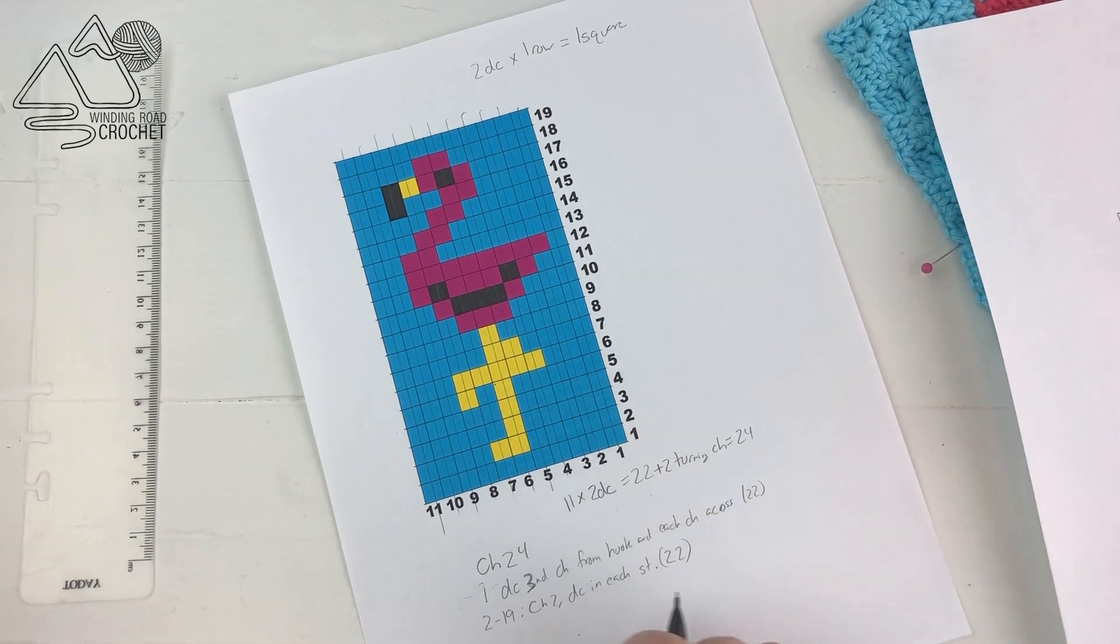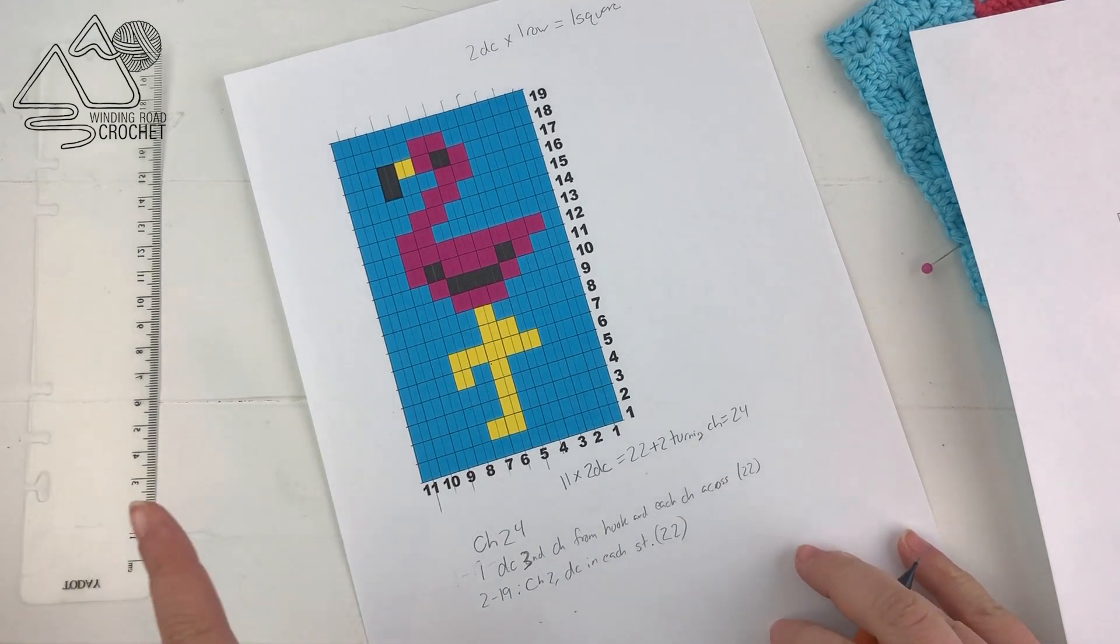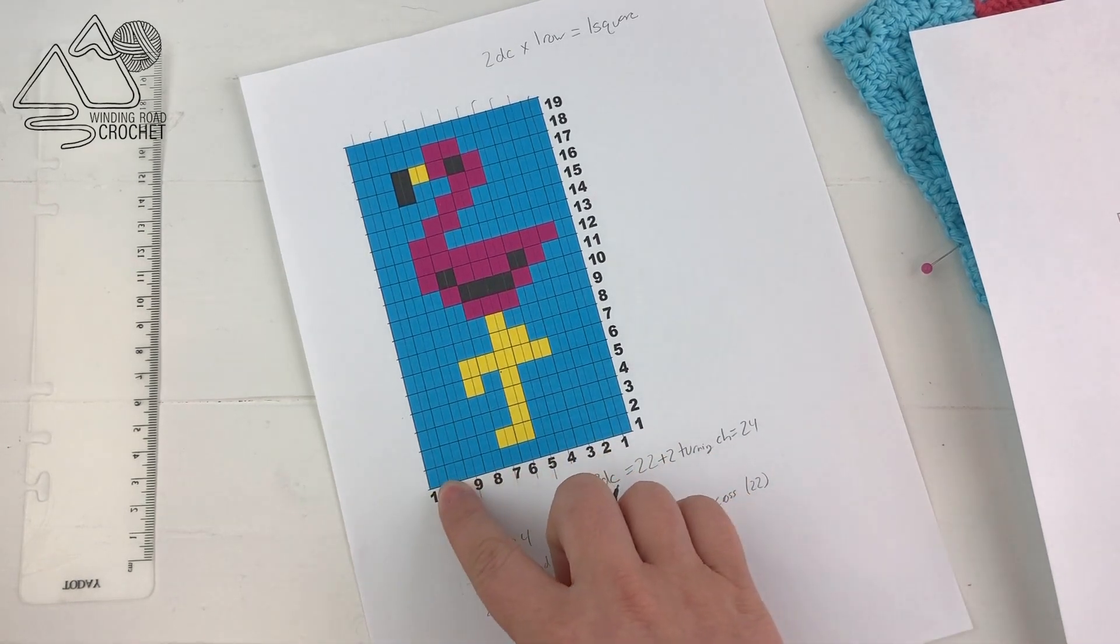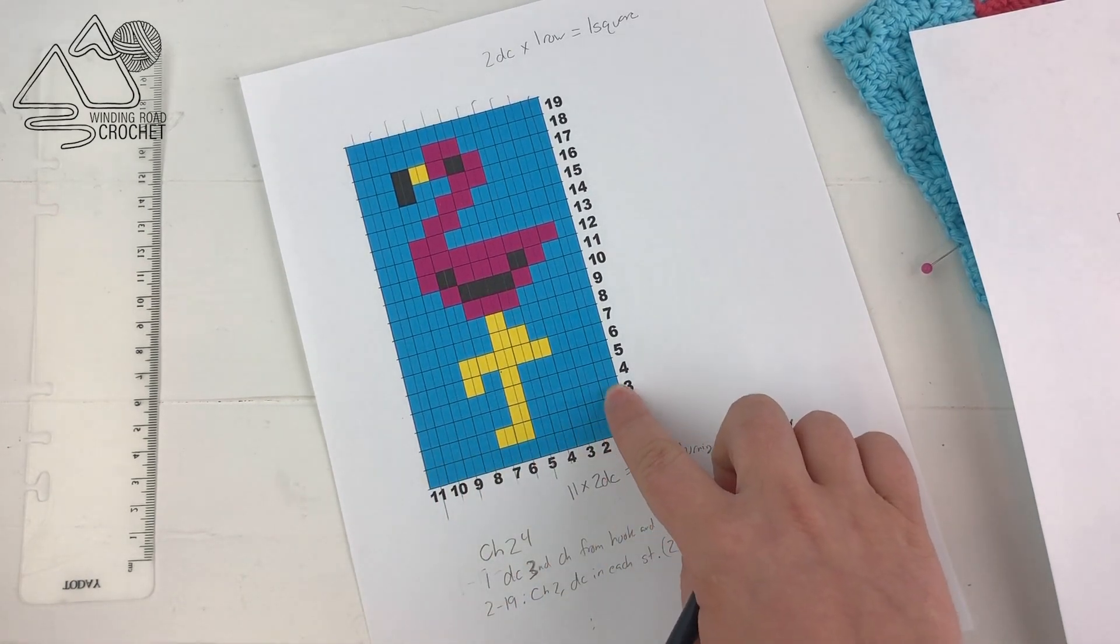This seems like a really simple step, but it just helps you from getting confused. It reminds you how many stitches you're supposed to have, because in case your count becomes off somewhere, you'll be able to go back and fix it a little easier.